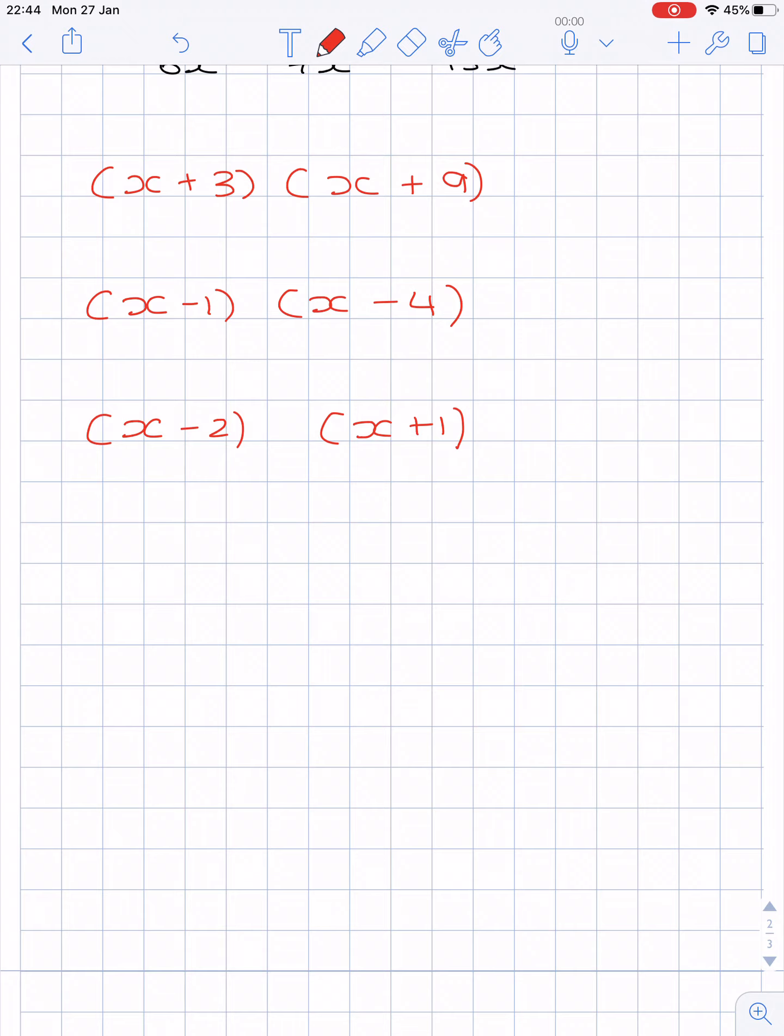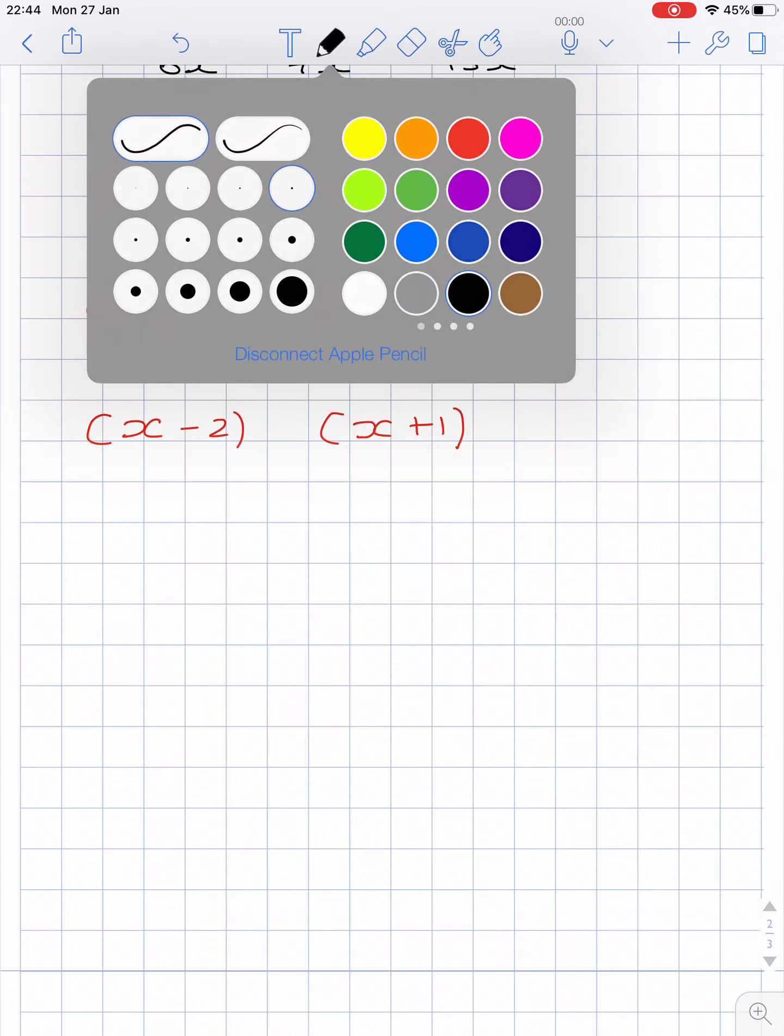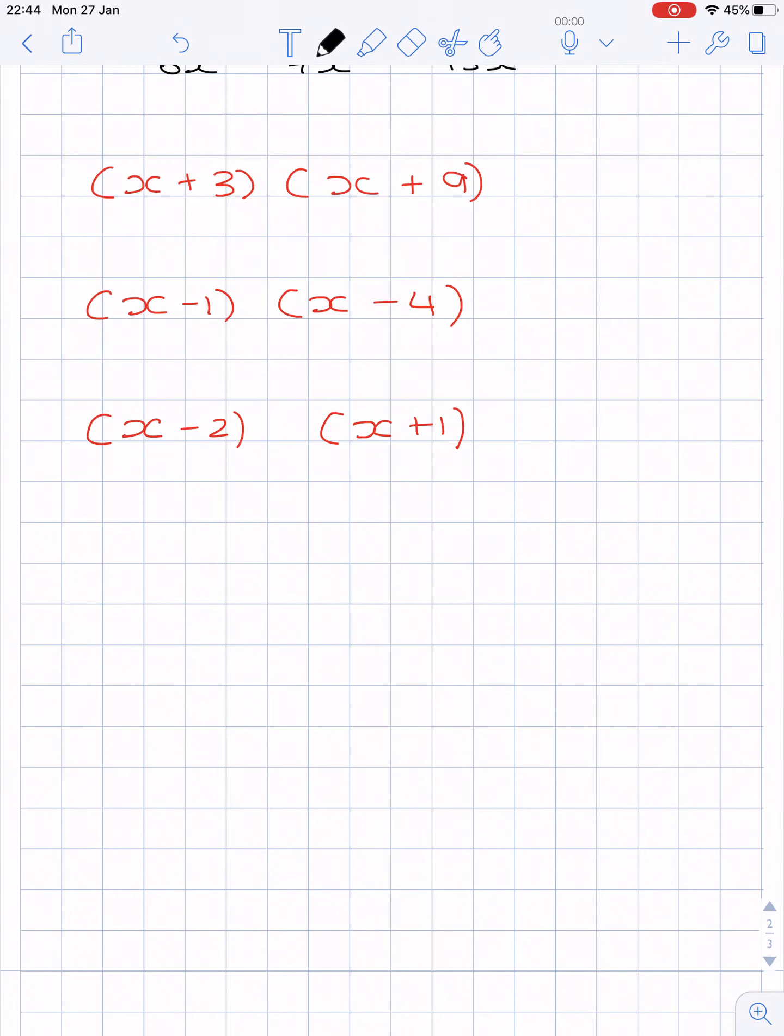OK, so now if you've played the video, that means you are ready for the solution. So for the first question, we do the outside. We get x squared plus 9 times 3 which is 27. Doing the inside, we'll get plus 3x plus 9x. So therefore we'd get x squared plus 12x plus 27.